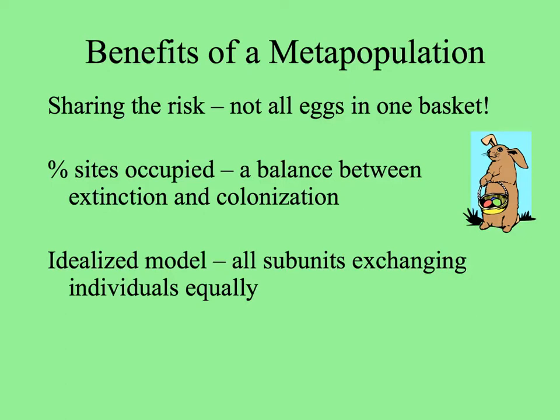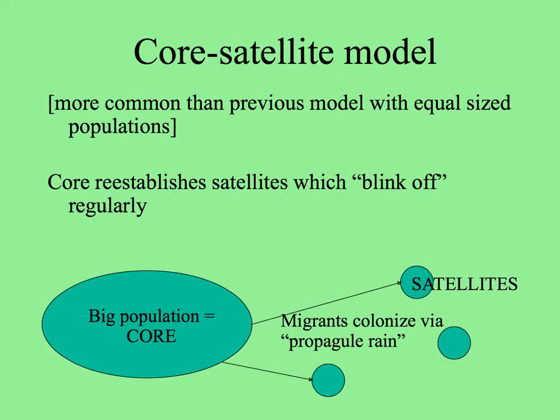In Levins' idealized model, all of the subunits exchange individuals equally. More common is probably the core-satellite model, where there's a large, good area called the core population, and smaller satellite populations at different distances from it. The core is the area where the population is in a healthy state, producing lots of offspring that can colonize the satellites as migrants in a propagule rain.